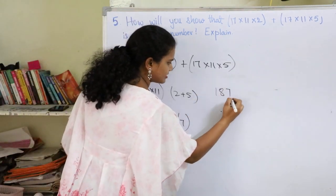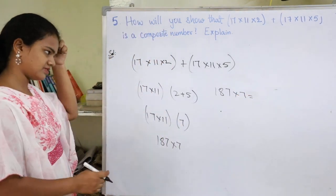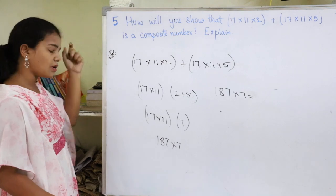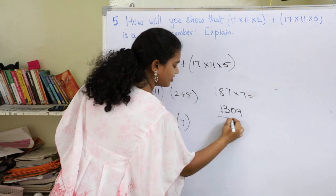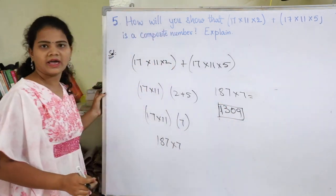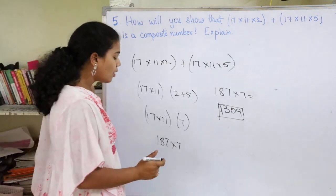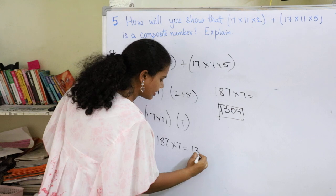Let me write down 187 into 7. 7 times 7 is 49, 7 times 8 is 56, 7 times 1 is 7, equals 1309. So I got 1309.